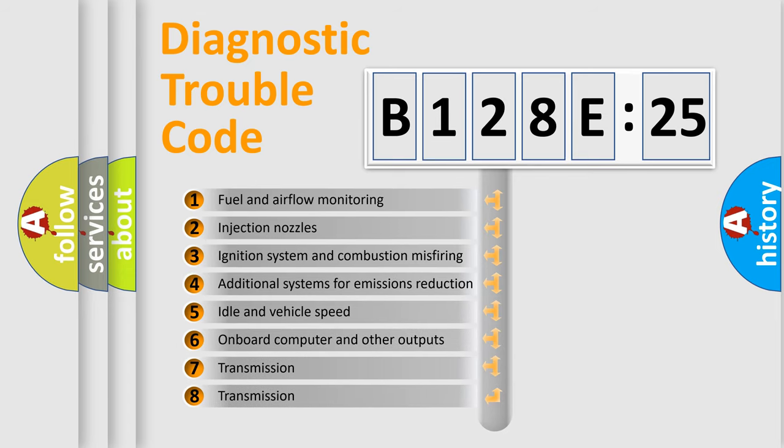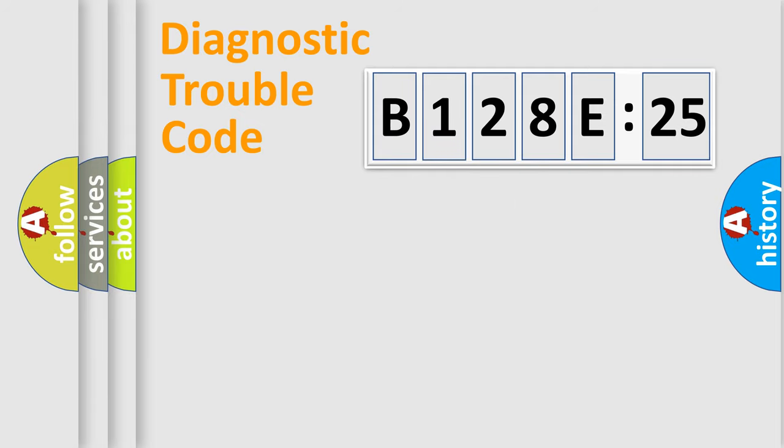The third character specifies a subset of errors. The distribution shown is valid only for the standardized DTC code. Only the last two characters define the specific fault of the group.